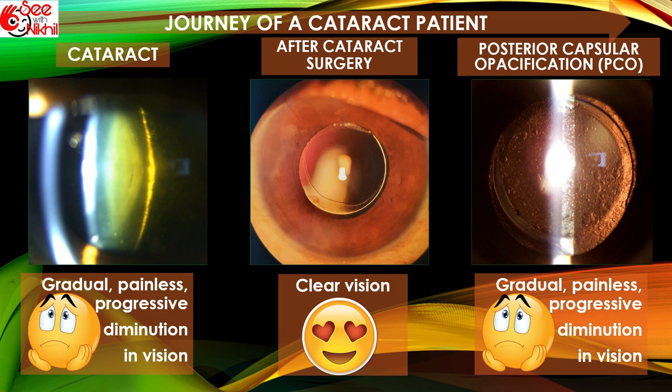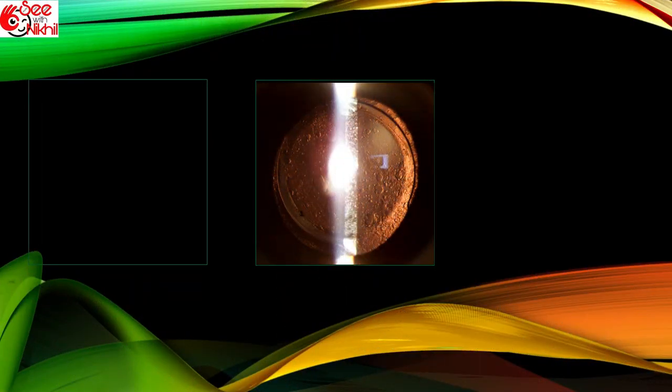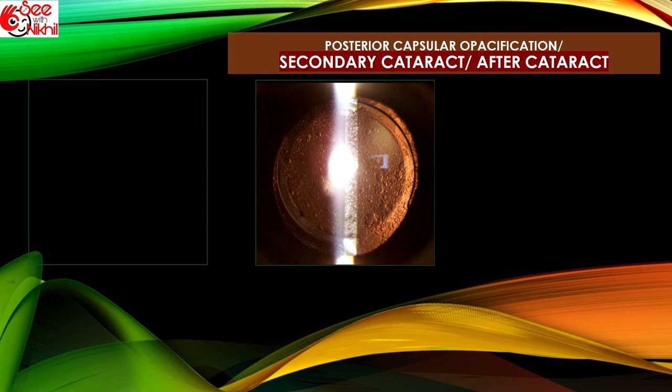PCO, in Hindi we call it lens per jala na or lens per parda na. Now this PCO is not a type of cataract, but still it is also known as secondary cataract or after-cataract, just because it presents like cataract with gradual painless progressive diminution of vision.